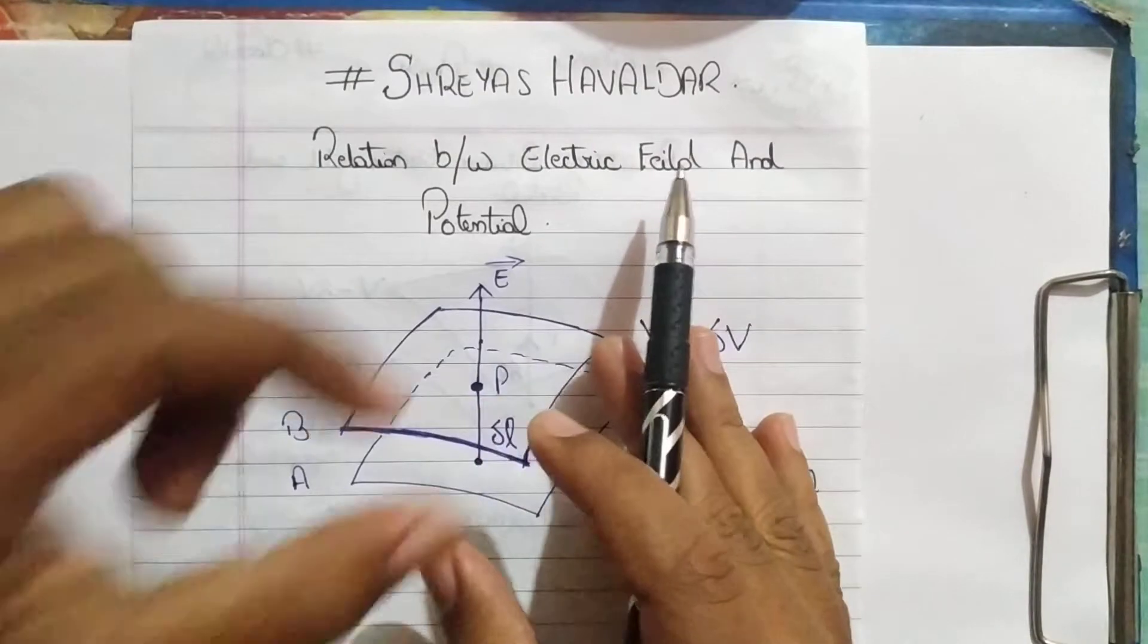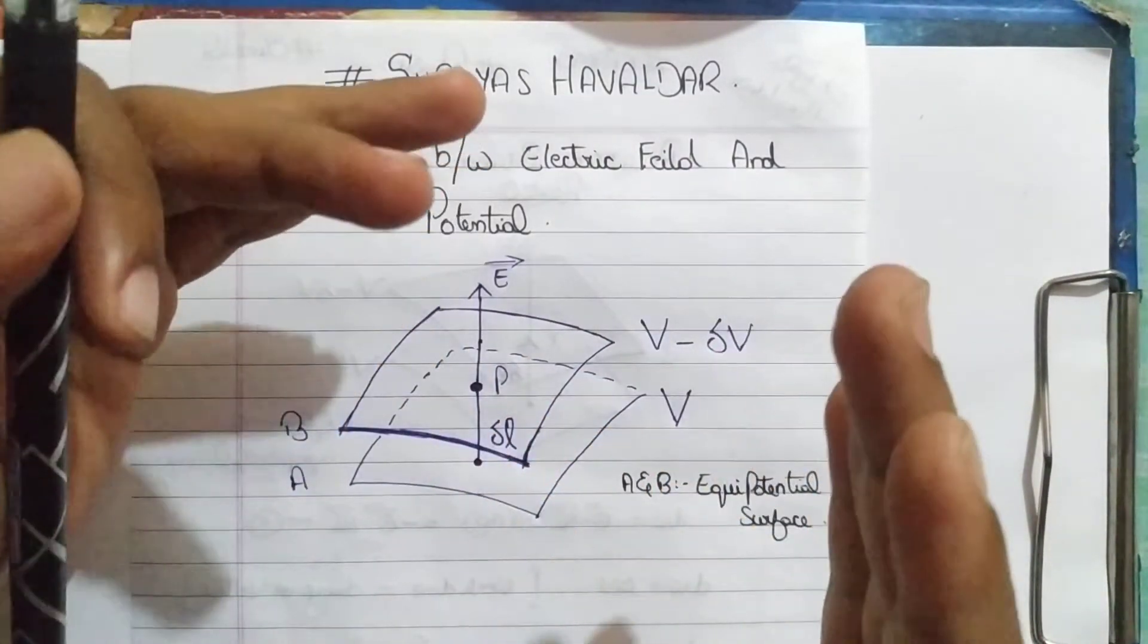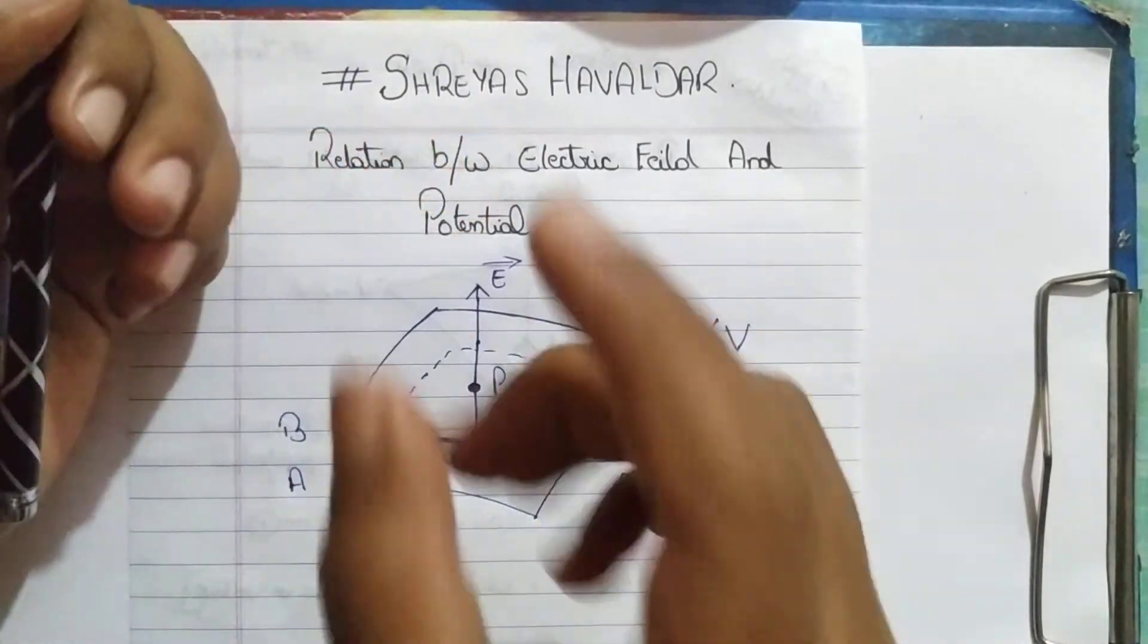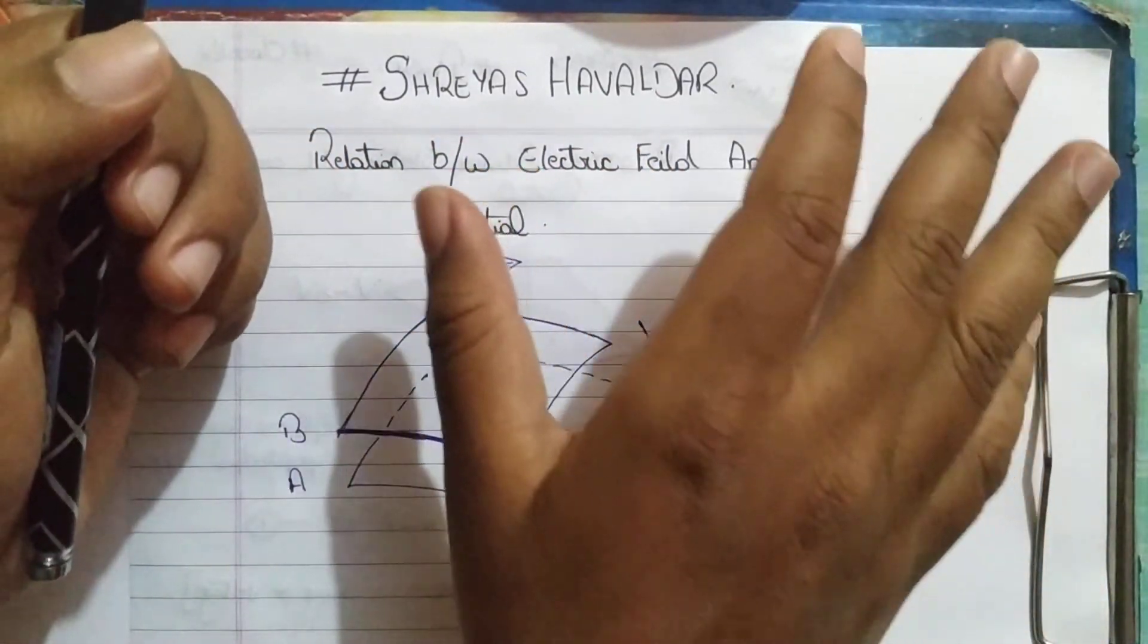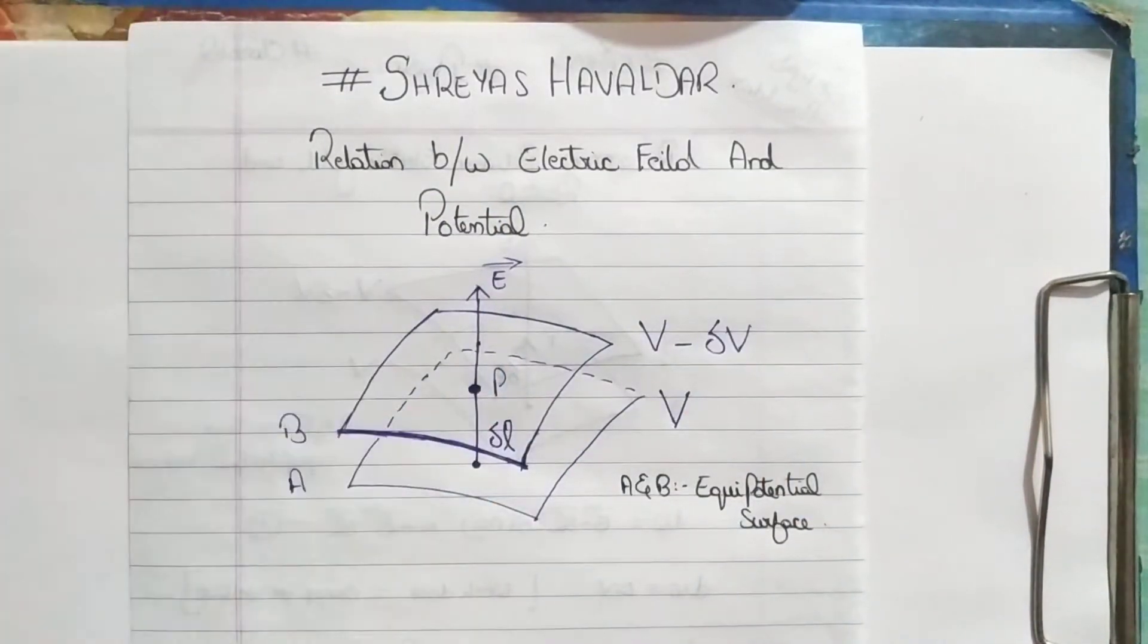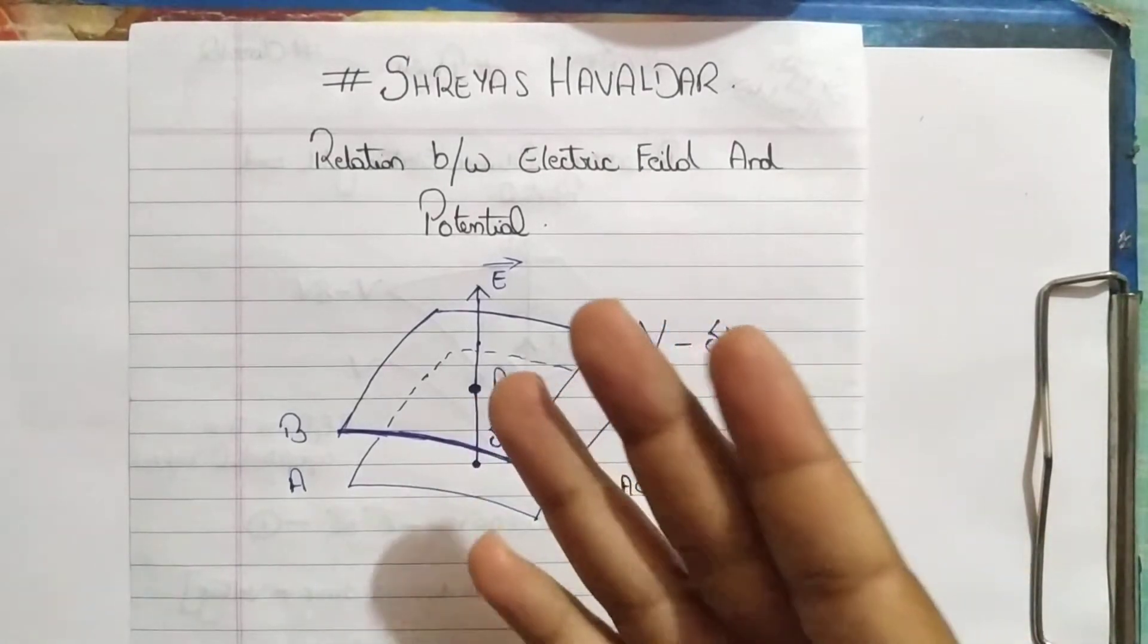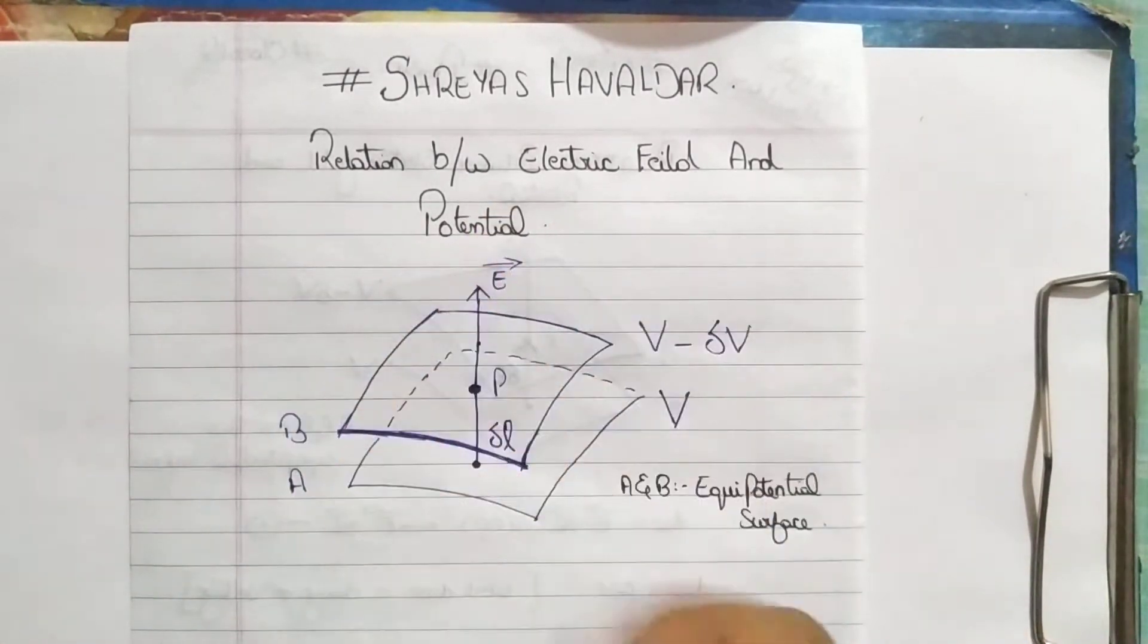As you all know, what you need to do is you need to remember the concepts or the derivation which is given in your textbook and you need to write as it is in your answer sheet. If you are expecting a passing mark, you will absolutely pass if you practice all the derivations.